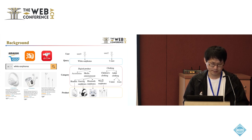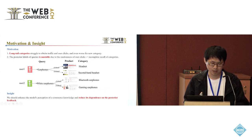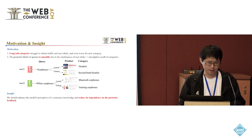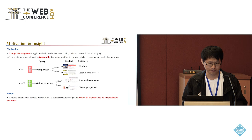Most existing methods rely on the user's click behavior as a supervised signal to construct their training samples. One major problem is the category imbalance in the training data, where long-tail categories are hard to obtain traffic and user clicks, and even worse for new categories. The second problem is that the posterior label of the query is unstable due to the randomness of user clicks.